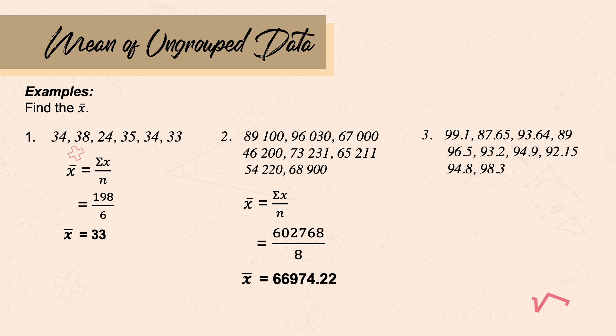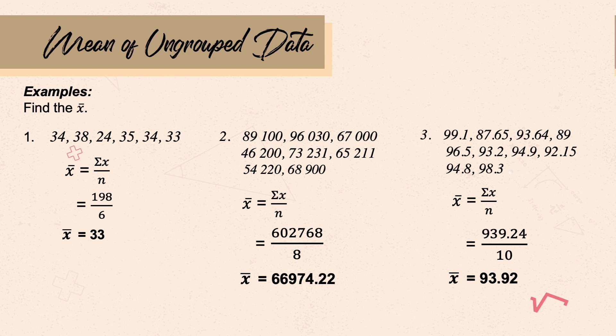Another example. Using the data, counting gives us 10 values. Getting the sum, it is 939.24. Using the formula, we divide 939.24 by 10, which gives 93.92. That's how you get the mean of ungrouped data.